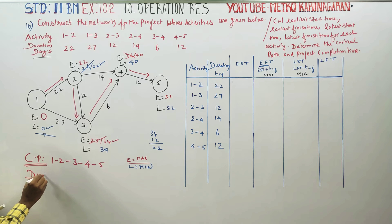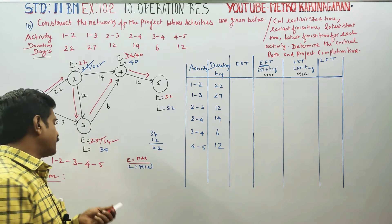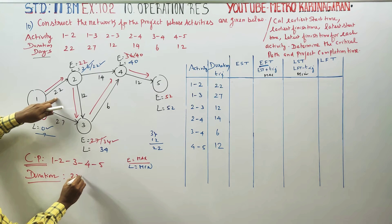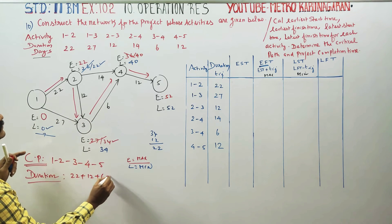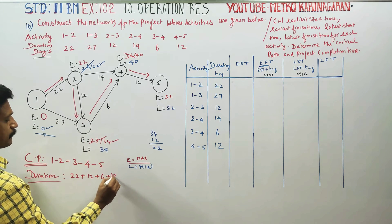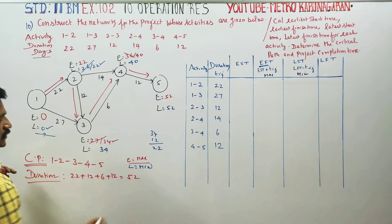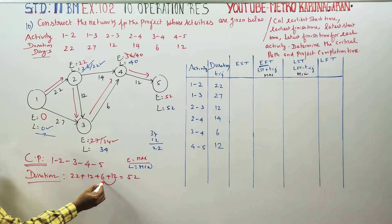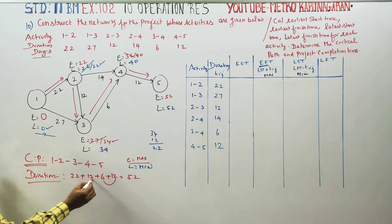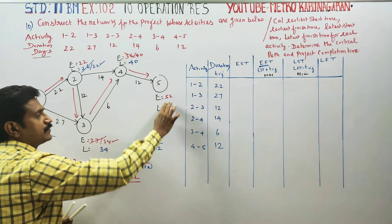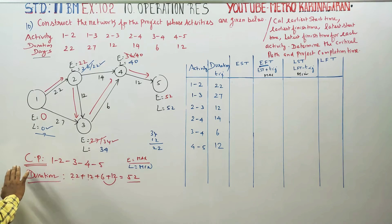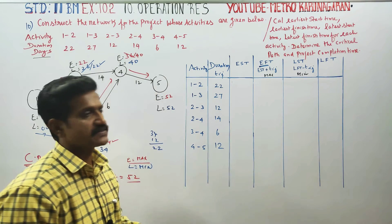Project Duration, or Project Completion Time, is 52 days. The critical path runs through activities 1→2→3→4→5 with a total duration of 52 days.